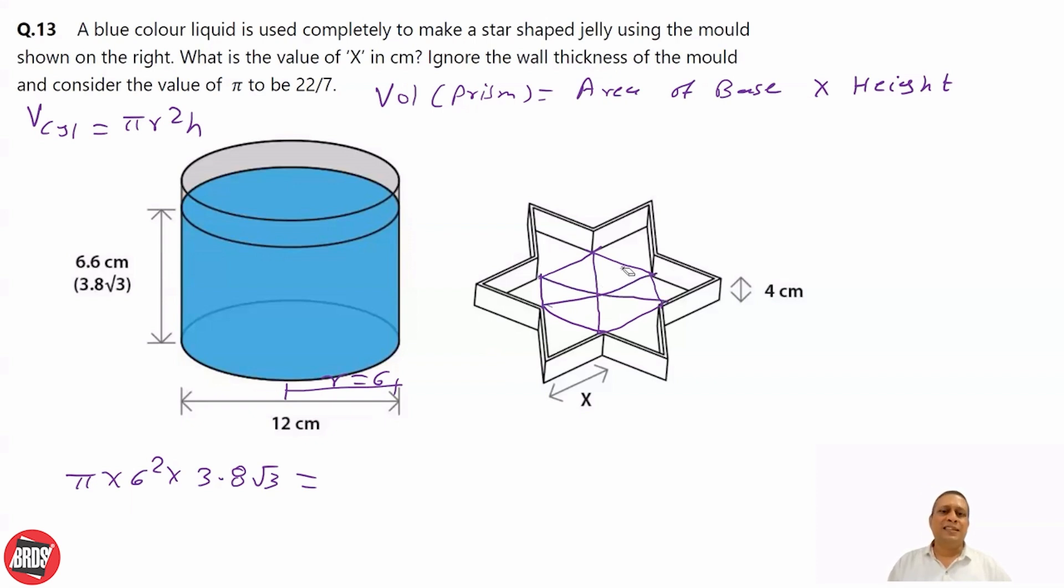So basically, there are 12 equilateral triangle like this, whose length of side is x. Correct? There are 12 equilateral triangle. And area of equilateral triangle is nothing but root 3 by 4 side square. Remember this one. Area of equilateral triangle is root 3 by 4 side square.